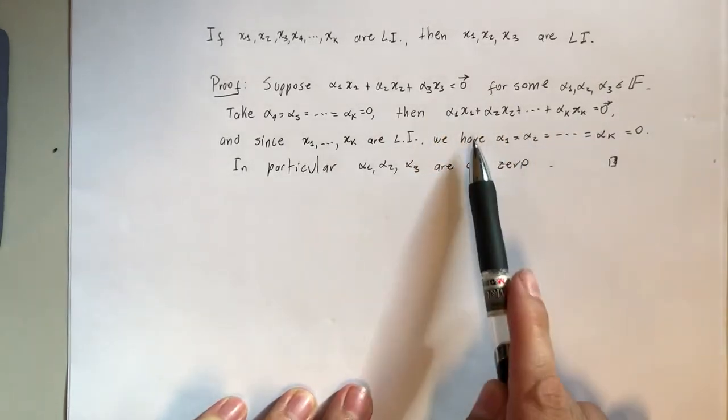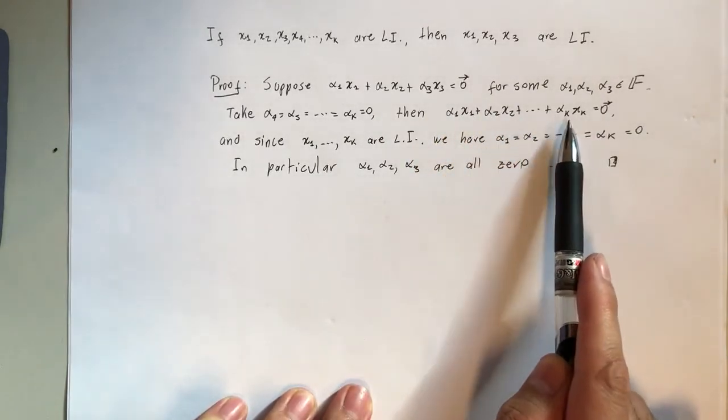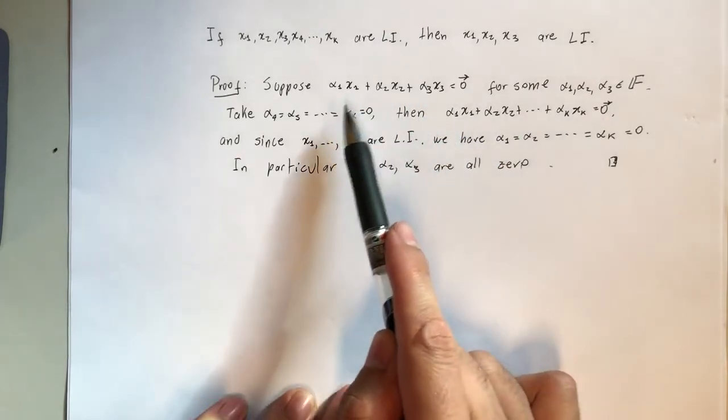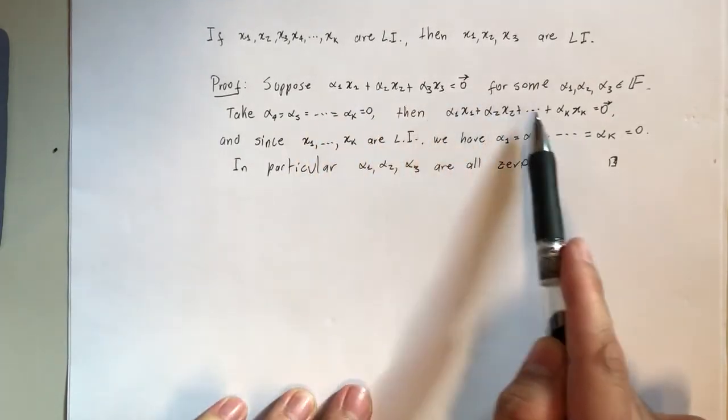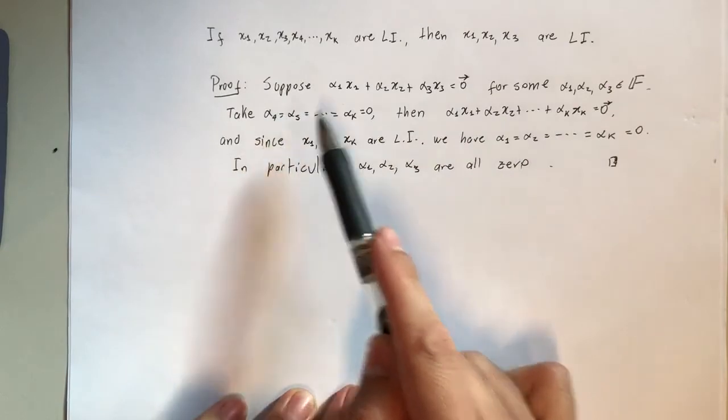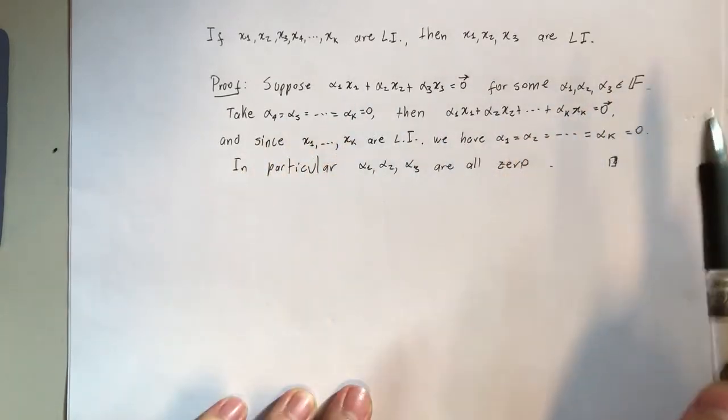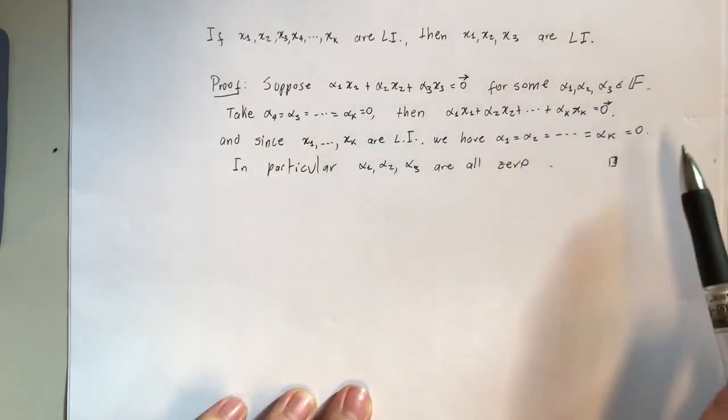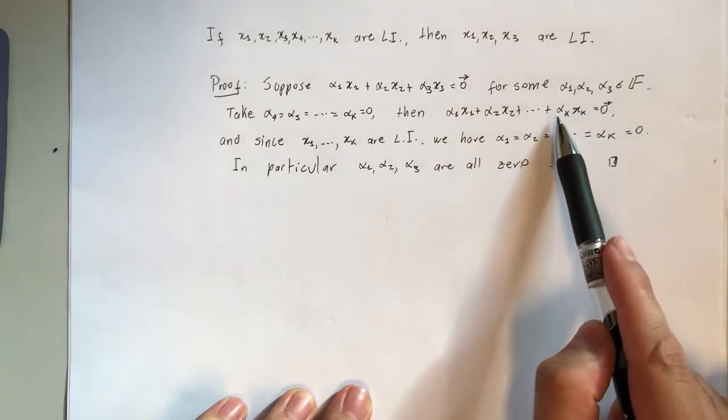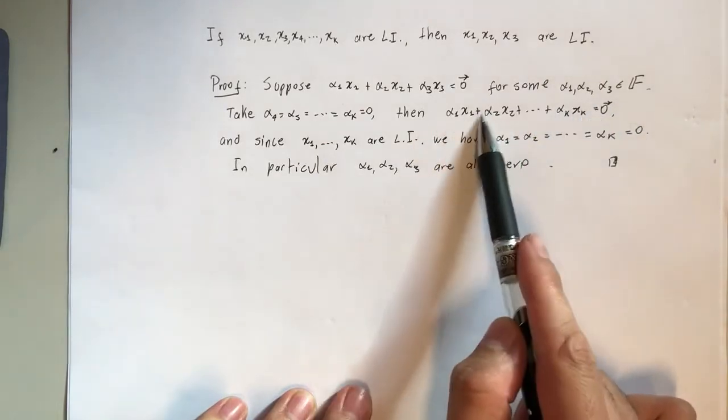Well, this linear combination can be split into two parts. The first part has α₁, α₂, and α₃ in it. The other part will have α₄, α₅, up to αₖ, each one multiplied by the respective x. These give zero because the first part gives zero and the second part also gives zero.